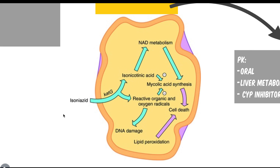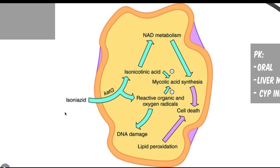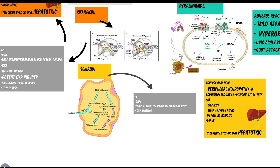Isoniazid works within the bacterial cell — it gets converted into isonicotinic acid, which then blocks mycolic acid synthesis. If you have a question about how isoniazid works, think mycolic acid. The enzyme KatG is very important to remember in this context.